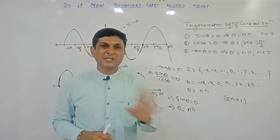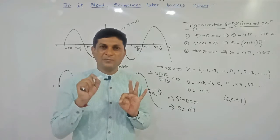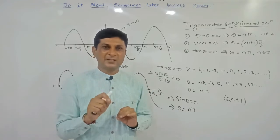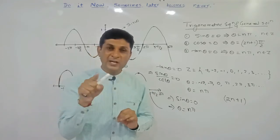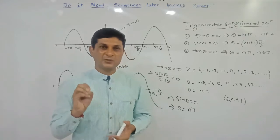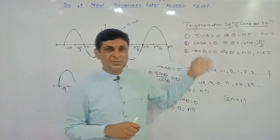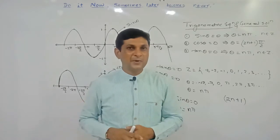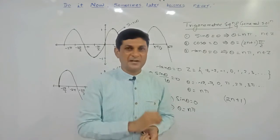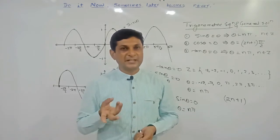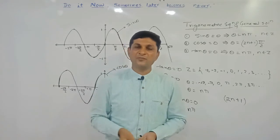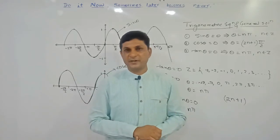So we have three important formulas: (1) sin θ = 0 implies θ = nπ; (2) cos θ = 0 implies θ = (2n+1)·π/2; (3) tan θ = 0 implies θ = nπ. These are given as a remark in our textbook. Now, six theorems are given in the first article of this chapter on trigonometric equations — these theorems are formulas for finding the general solution.